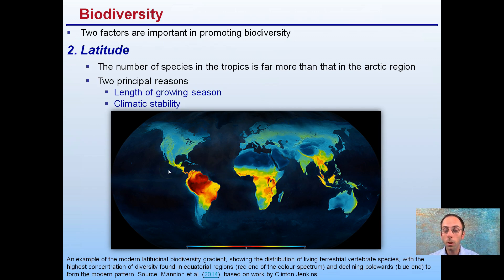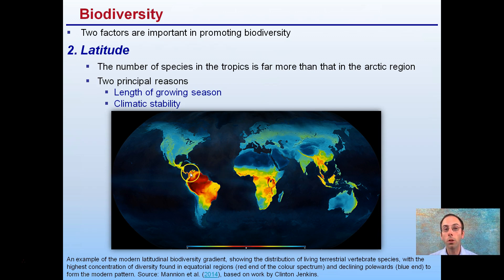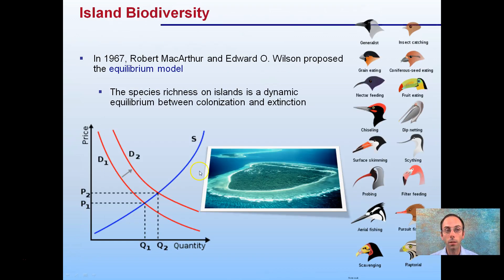The red color spectrum on the map indicates high biodiversity near the equator, and it declines as you move toward the poles, shown in blue. The tropical rainforest is definitely a hotbed for a large number of different types of species.